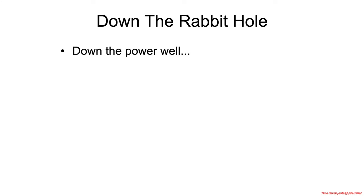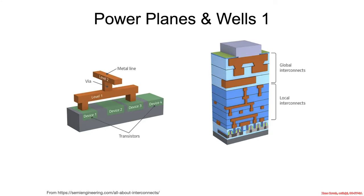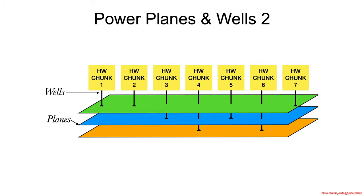We're going to go down the rabbit hole by going down the power well. As you may or may not know, modern CPUs are built up layer by layer of successive layers of silicon and oxide and metal and things like that, and so a cross-section of a chip these days looks like this. There's terminology frequently used in low power states about power planes and power wells.